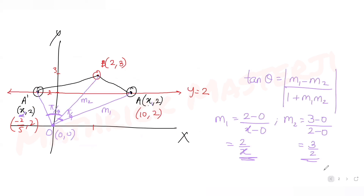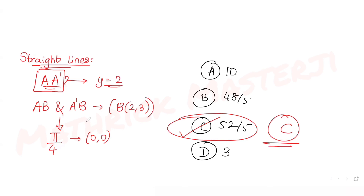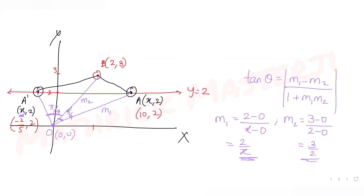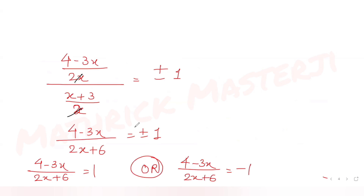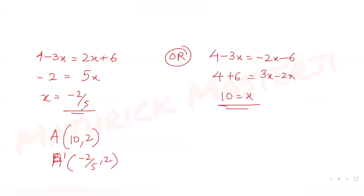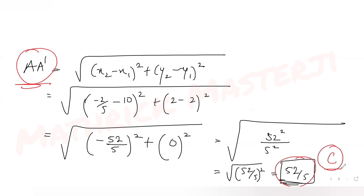So the answer is 52/5, which matches option C. C is the correct answer. To recap: we used the acute angle formula tan θ = |m₁ − m₂| / (1 + m₁·m₂) to find the x-coordinates of points A and A', then used the distance formula to find that the distance between them equals 52/5, which is option C.